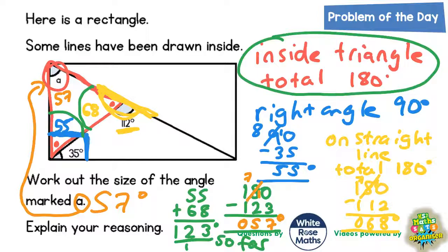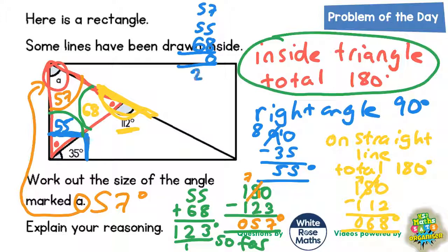Just to double check, we could see if our angle of 57, 55, and 68 actually does add up to 180 inside the triangle. Let's just do a quick check. 57, 55, and 68, what does that equal? 7 plus 5 is 12, plus 8 is 20. Put the 0 in, carry the 2. 5 plus 5 is 10, plus 6 is 16, plus 2 is 18. So it does look as though they are the angles inside our red triangle.